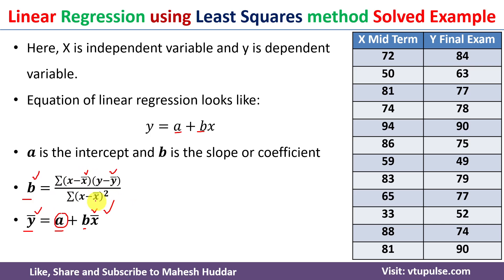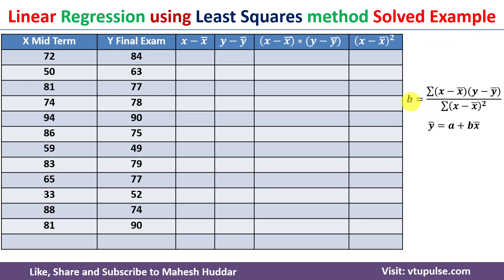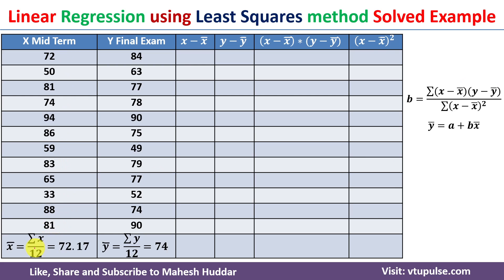We will calculate each of these components to find a and b and get the linear regression equation. To calculate b, we need the mean of x and mean of y. We add all the midterm grades and divide by the number of students, which is 12. The summation divided by 12 gives mean of x equal to 72.17. Similarly, the mean of y — the average of all final exam grades divided by 12 — equals 74.